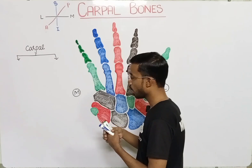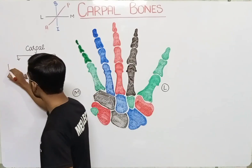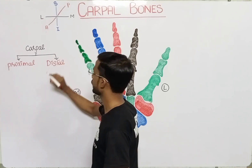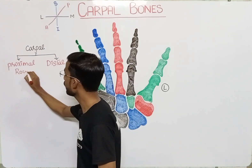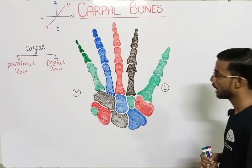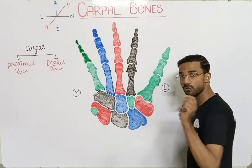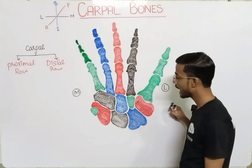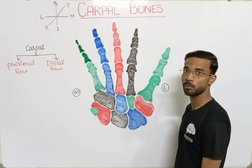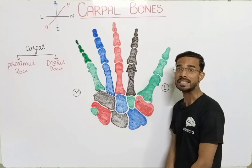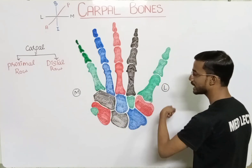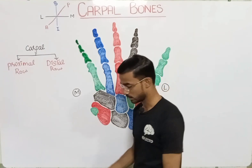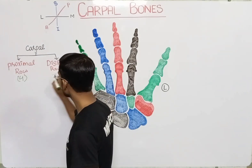We divide the eight carpal bones into two rows. The first is the proximal row and the second is the distal row. The first row is called proximal because it is near to the center of our body, and the second row is distal because it is away from the center. In each row you will see four bones.